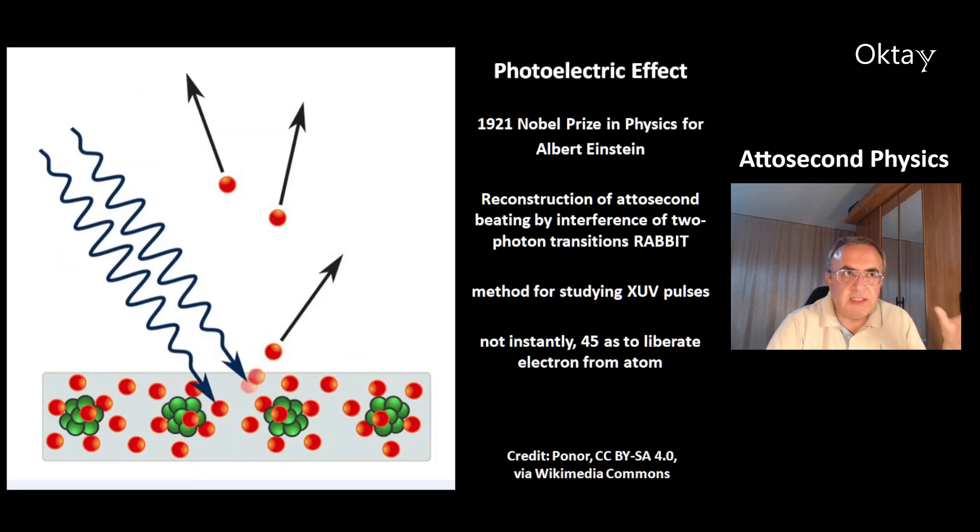This is a description of the photoelectric effect. Albert Einstein won in 1921 the Nobel Prize in Physics for the photoelectric effect. This material is hit by photons. This causes a flow of electrons. There is a method called RABBIT. That's reconstruction of attosecond beating by interference of two photon transitions. This is a method for studying the extreme UV pulses. And now we know the photoelectric effect is not an instant effect. It takes 45 attoseconds to liberate the electron from the atom after the atom is hit by the photons.